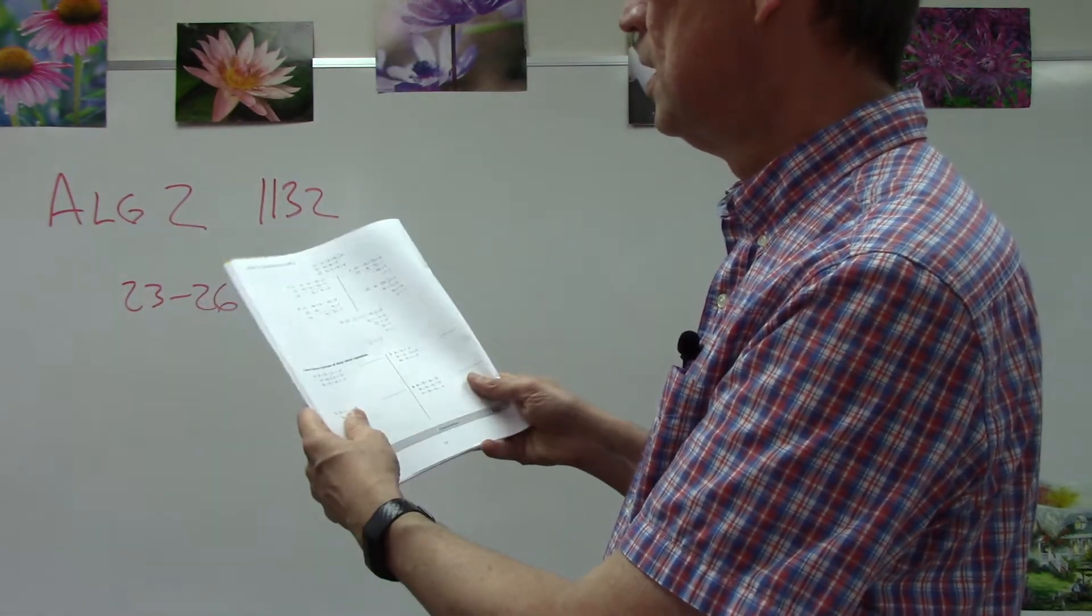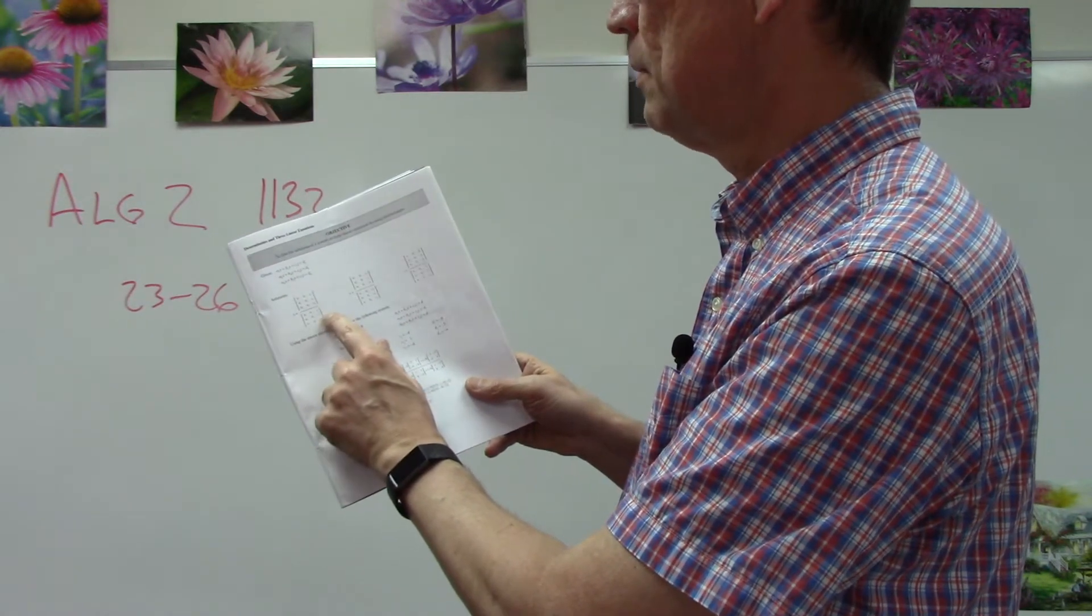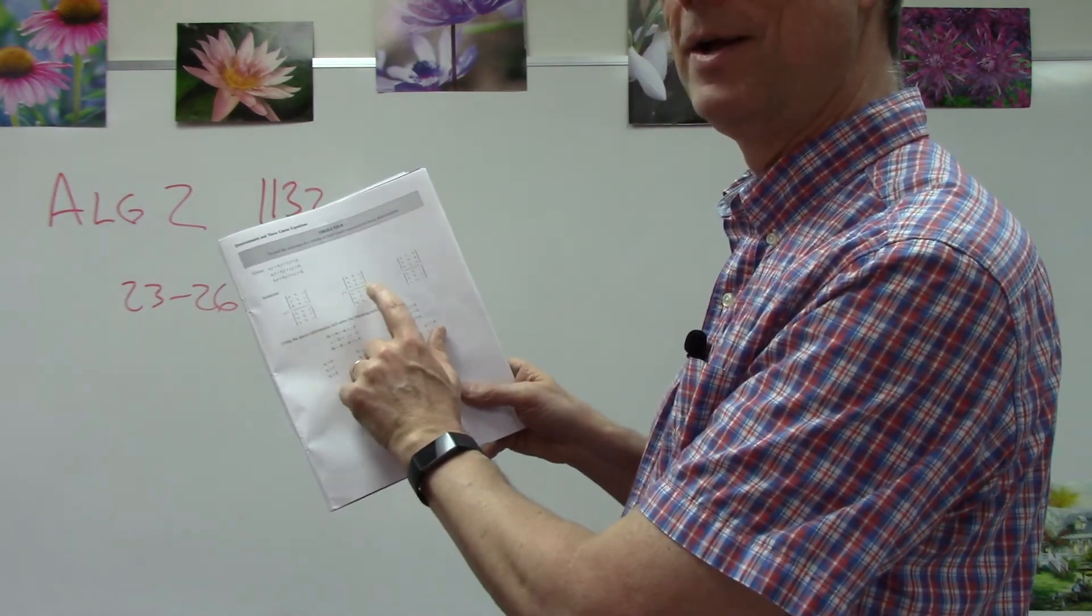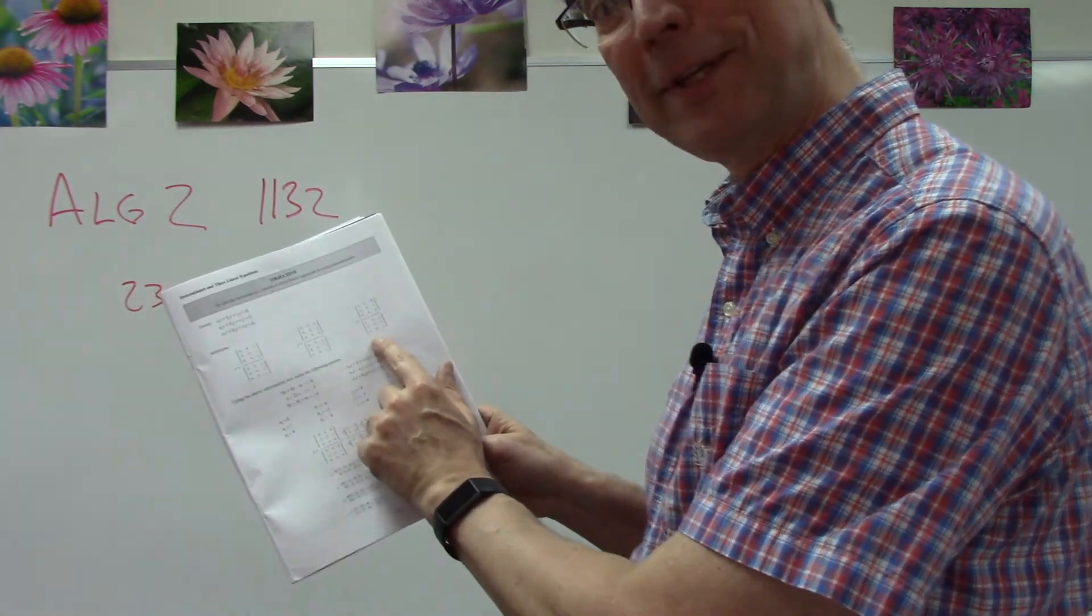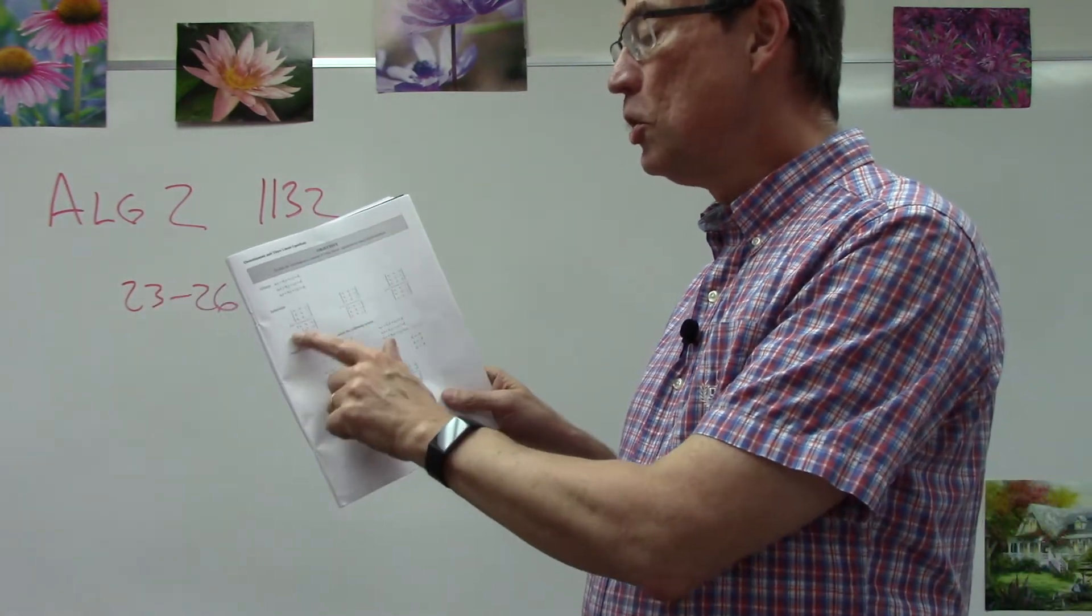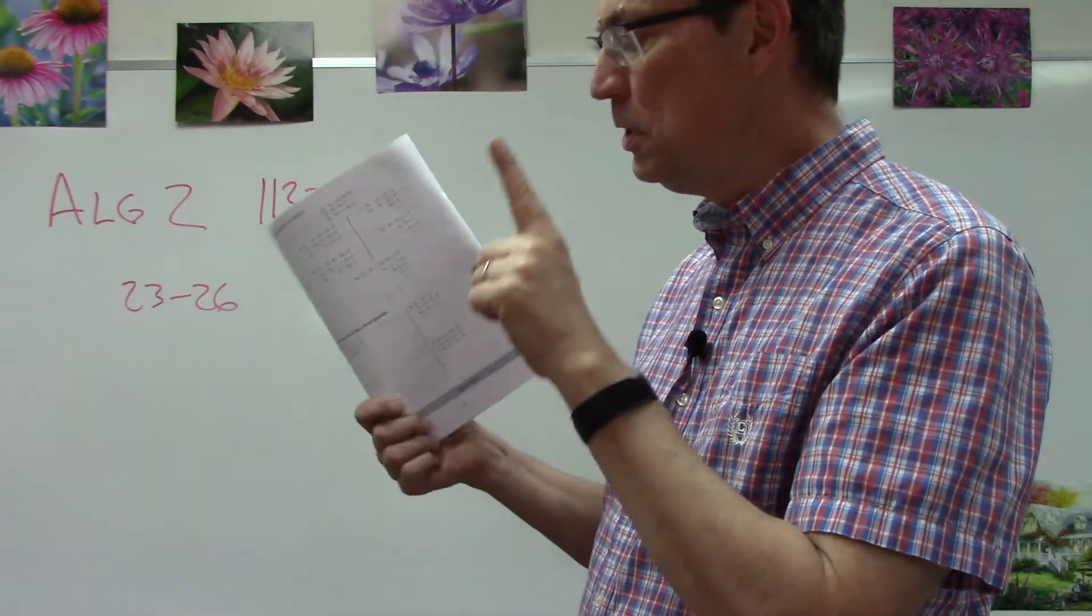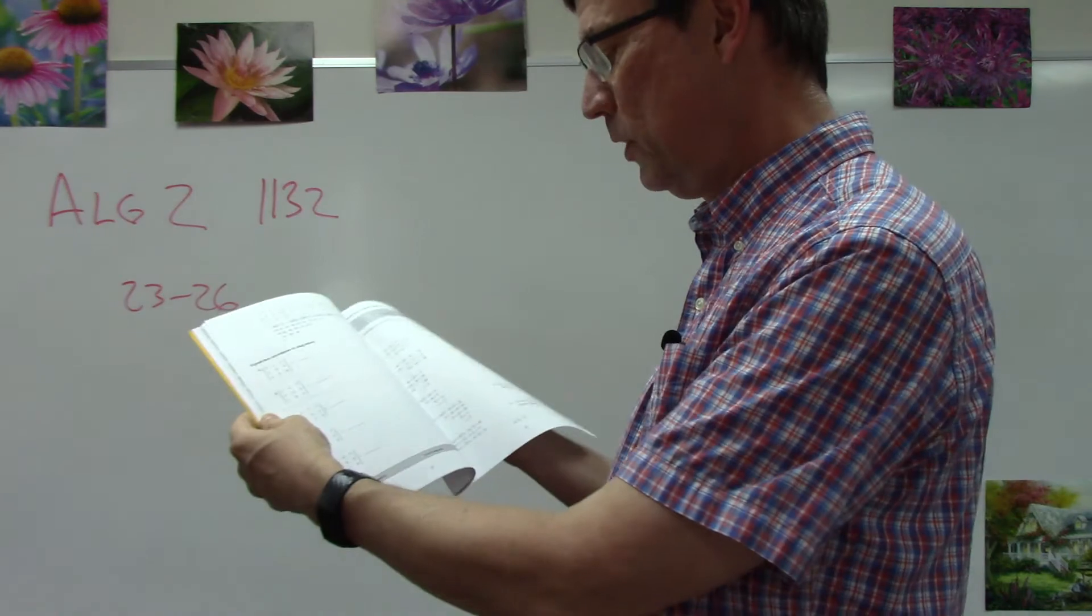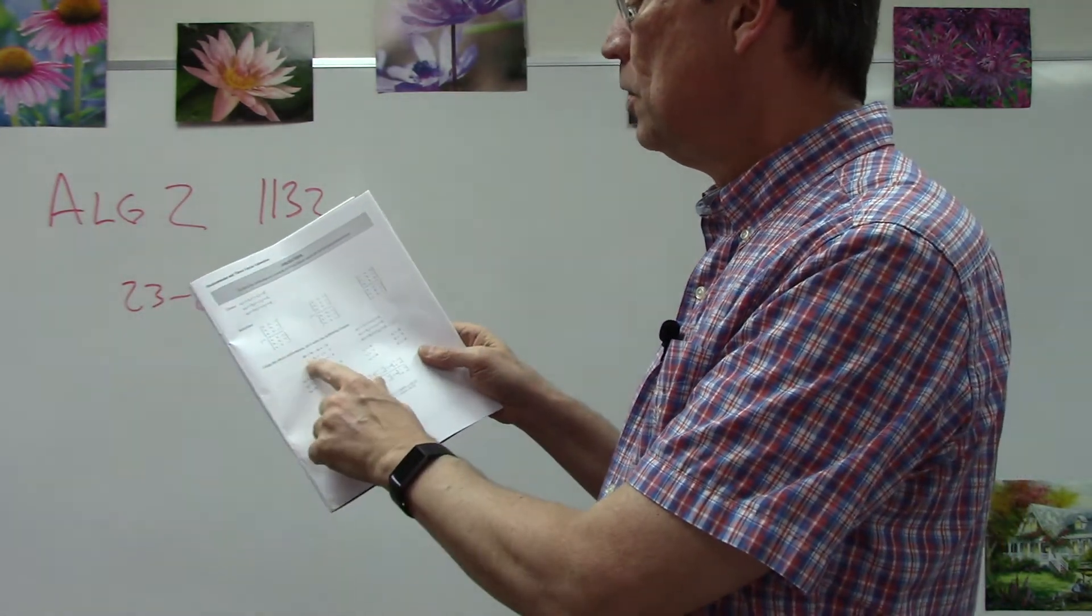We did that back here: expand these determinants by using the minors. We're going to use this very same process that you did for these five problems, but now you're going to do it to find the numerator on x and the denominator on x, the numerator on y, the top of y, the numerator on z, the denominator on z.